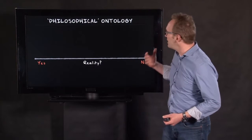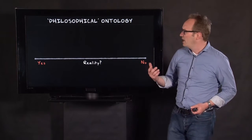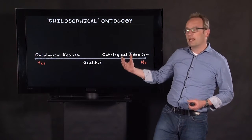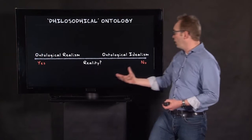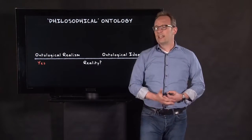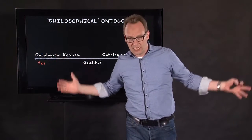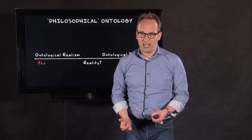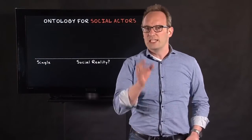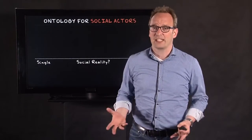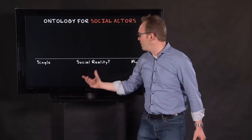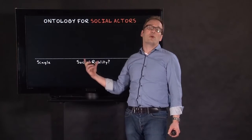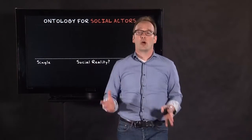And the discussion in philosophical ontology about being and the state of being is whether there is a reality out there or whether there's not. And there's a whole library written about this, and I'm not going to discuss that. What I'm going to discuss is ontology for social actors, social ontology. And we have the same kind of dimensions, but there's a difference here because now we're not talking about reality in general. We are talking about social reality.